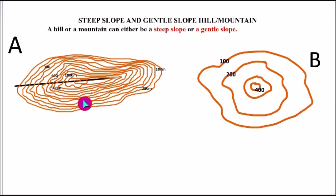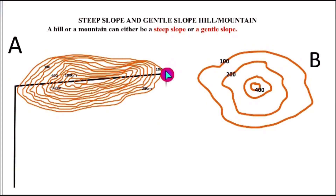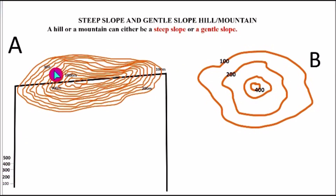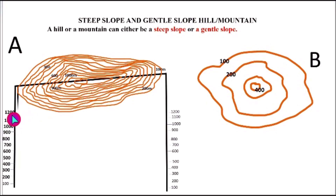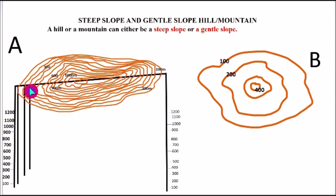Let's do the cross-section for contour A. You draw a horizontal line to cut across all the contours. Then you draw your vertical axis at the left side, and then another vertical axis at the right side. You mark the vertical axis according to the calibration or numbering of the contour. So 100 is here, the second contour is 200, and so on up to the last contour which is 1,200. You do the same at the right side. Then you trace each of the contour lines exactly on the horizontal line to the corresponding markings on the vertical axis.